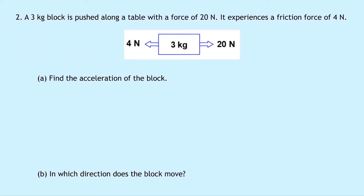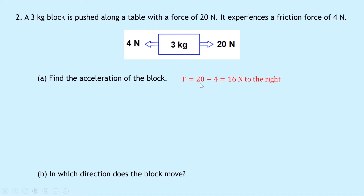Question two says: a three kilogram block is pushed along a table with a force of 20 Newtons, and it experiences a friction force of four Newtons. You've got 20 Newtons moving to the right and four Newtons moving to the left — ideally the arrow for 20 Newtons should be longer to show the difference in magnitude. In part A we're asked to find the acceleration of the block. First we work out the unbalanced force: F equals 20 minus four, which is 16 Newtons to the right.